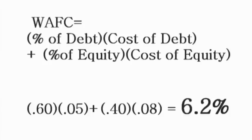The weighted average flotation cost would be 6.2%. Using the formula, the debt is 60% of the capital structure with a cost of 5%, so we do 0.60 multiplied by 0.05. Then we add that to 0.40 times 0.08, where 0.40 represents 40% equity and 0.08 represents the 8% cost of equity.